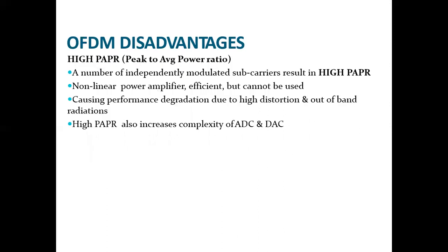Though OFDM has advantages, it also has disadvantages. It requires high PAPR, that is peak-to-average power ratio. A large number of independently modulated sub-carriers results in high PAPR, so a non-linear power amplifier, though efficient, cannot be used. It also causes degradation due to high distortion and out-of-band radiation, and leads to increased system complexity.